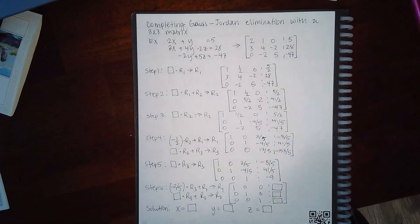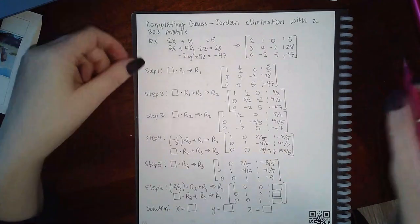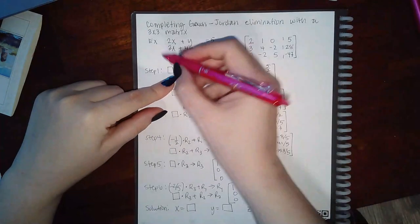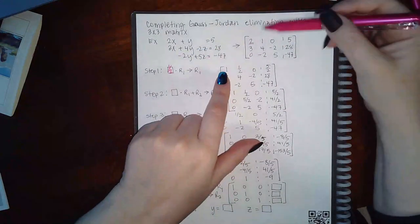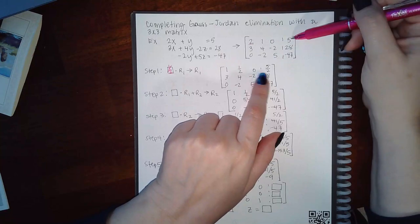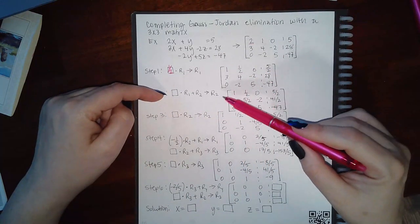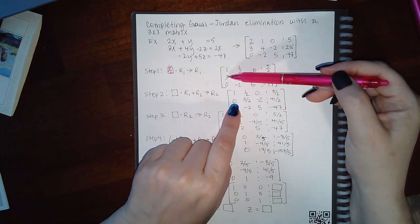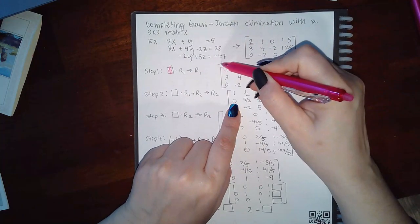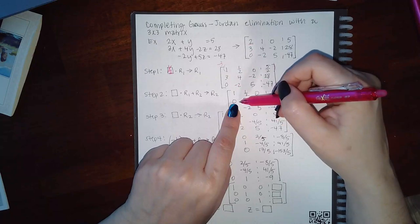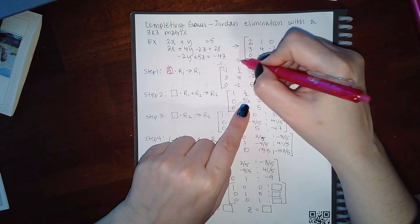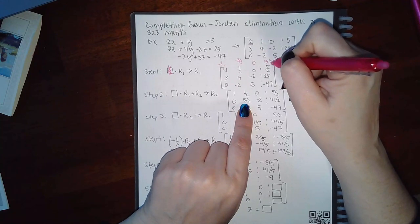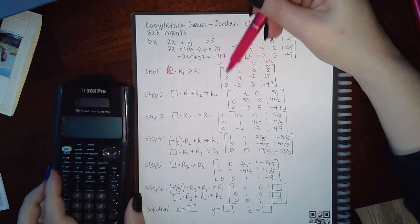This is a guided problem. They changed row 1 and went from a 2 to a 1 — multiply by 1/2. Half of 2 is 1, half of 1 is 1/2, half of 0 is 0, and half of 5 is 5/2. Now they give a new row 2 — they eliminated the 3, which turned to zero. To eliminate the 3 you multiply that row by negative 3, so you get negative 3/2 for one entry and negative 15/2 for the constant. Verify: negative 3 and 3 is zero, negative 3/2 and 4 is 5/2, zero and negative 2 is negative 2, and negative 15/2 plus 28 is 41/2.